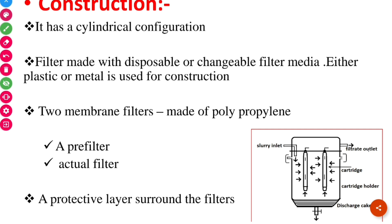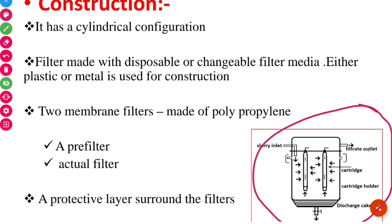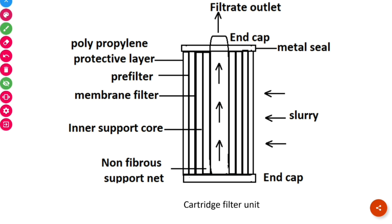Now moving on to the construction of the cartridge filter. The cartridge filter has a cylindrical configuration. The filter media used is disposable and changeable type. Plastic or metal are the materials used for construction. There are two membrane filters made up of polypropylene — one is pre-filter and the other is actual filter. These two filters are combined into a single filtration unit, which is surrounded by a protective layer. This forms a single cartridge filter unit.